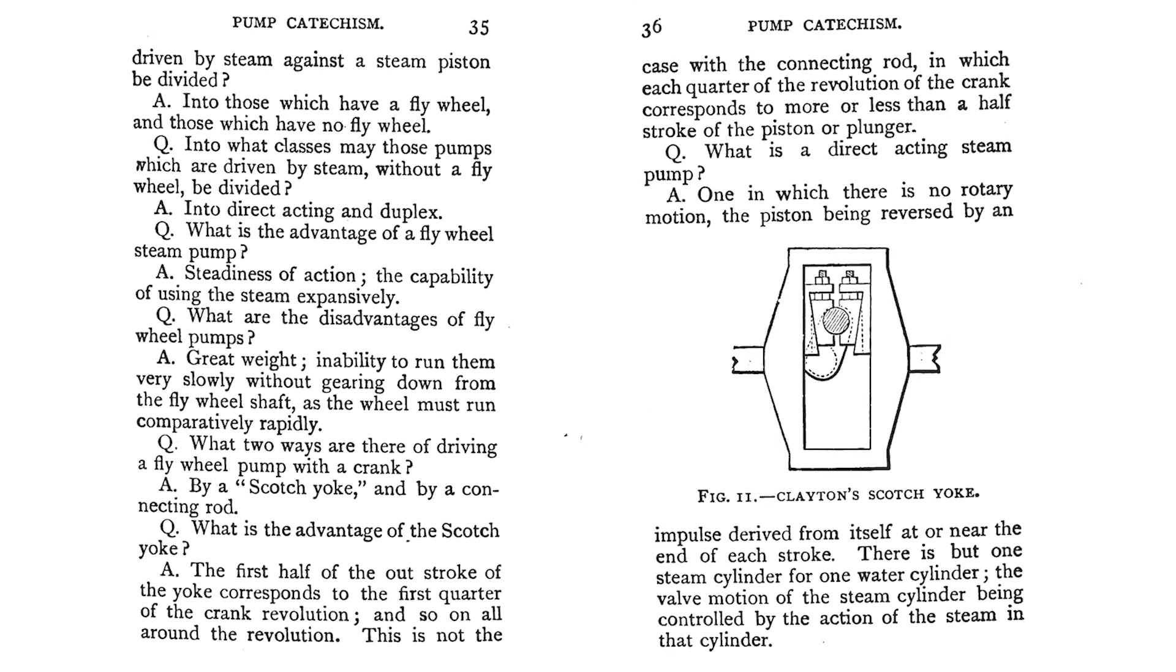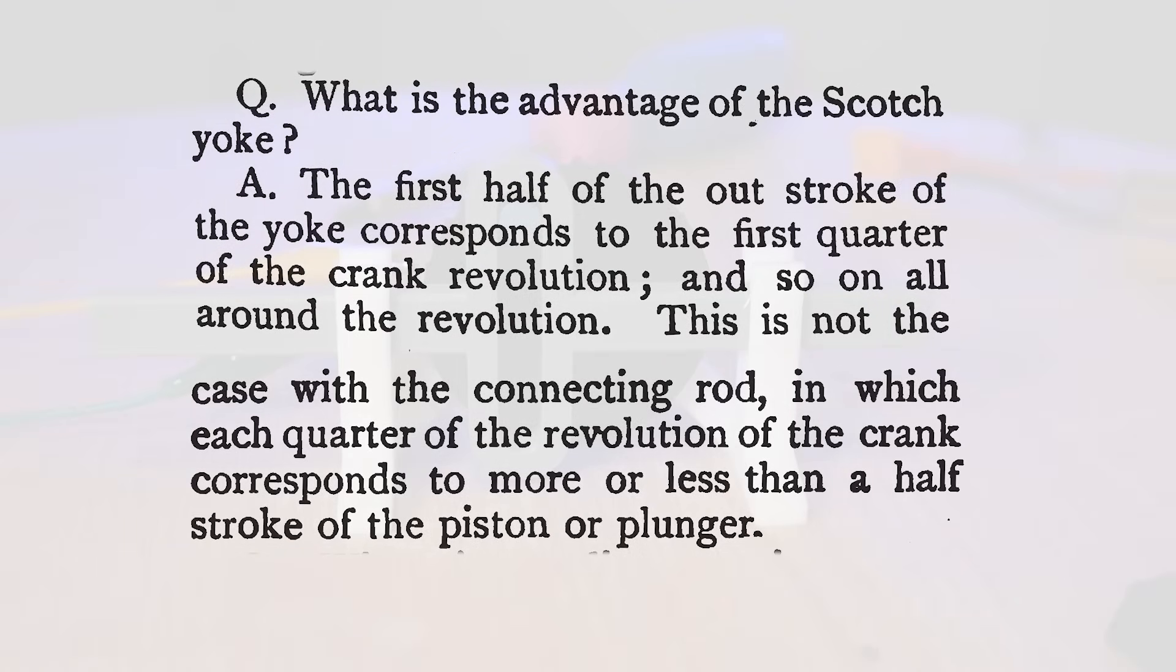And what's even cooler is that it gives reasoning as to why. The author writes that the advantage of the scotch yoke mechanism is, quote, the first half of the outstroke of the yoke corresponds to the first quarter of the crank revolution, and so on all around the revolution. This is not the case with the connecting rod, in which each quarter of the revolution of the crank corresponds to more or less than a half stroke of the piston or plunger.